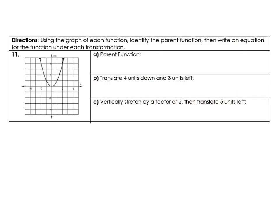So for these next ones, we need to use the graph and identify the parent function, and then we need to write an equation for each of the descriptions. For the first part here, our parent function looks like it's going to be x squared. In part b, we want to translate this 4 units down and 3 units left. So our new function – f of x equals – we're going to have x plus 3, all squared, and then minus 4.